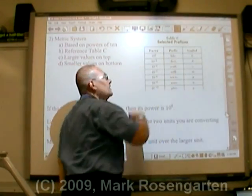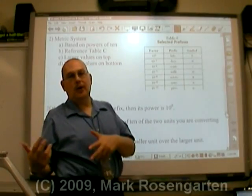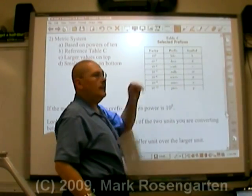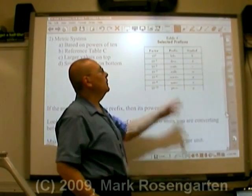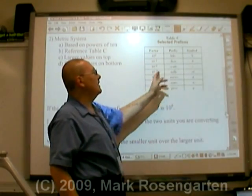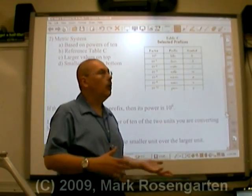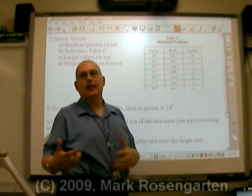Reference table C gives you metric prefixes and tells you what factor of 10 that metric prefix represents. For example, kilo means 10 to the third, or a thousand, so a kilogram would be a thousand grams. Desi is 10 to the negative first, or a tenth, so a desigram would be one tenth of a gram. And milli is 10 to the negative third, that would be one thousandth, so a millimeter is one thousandth of a meter.